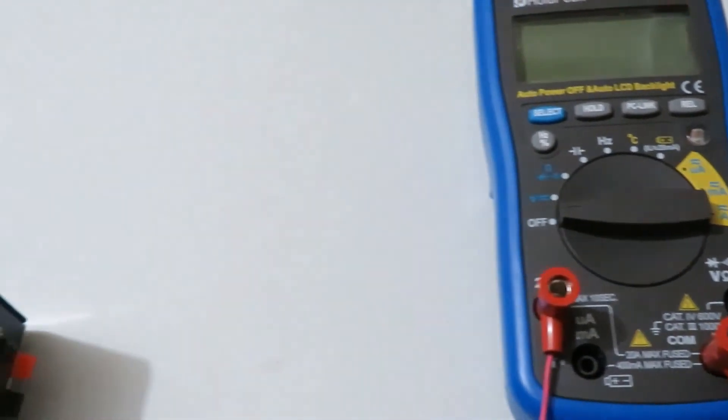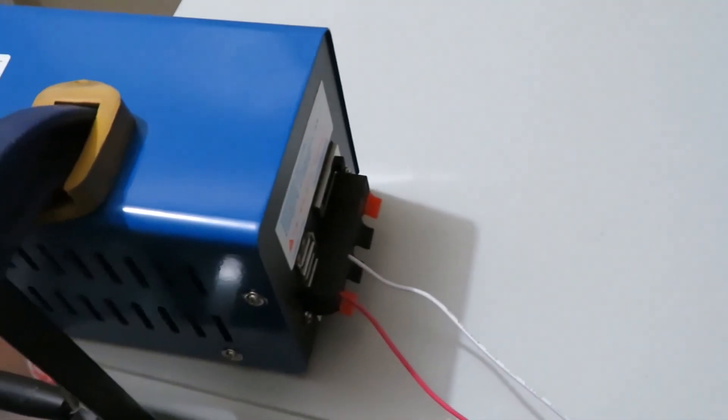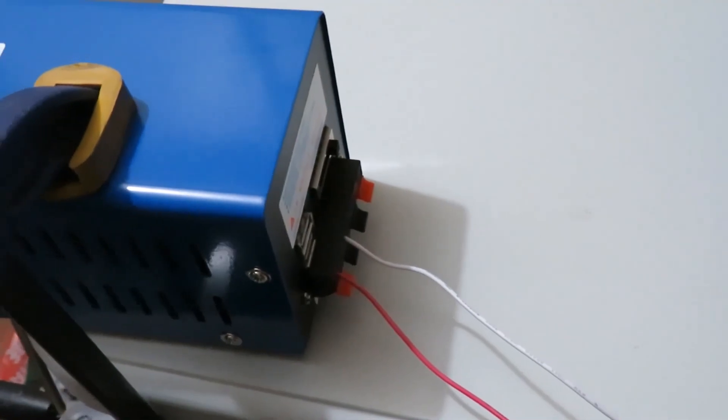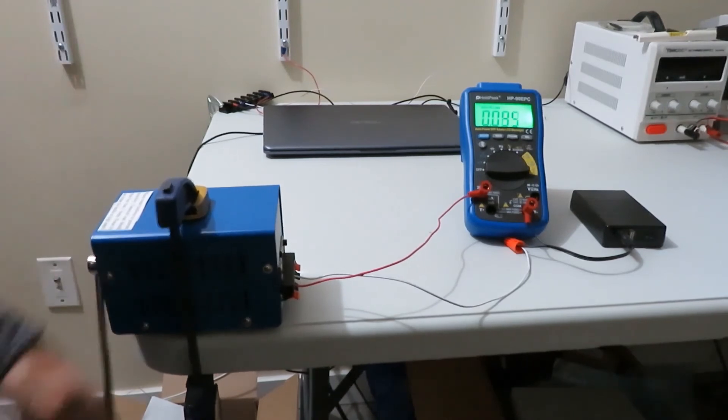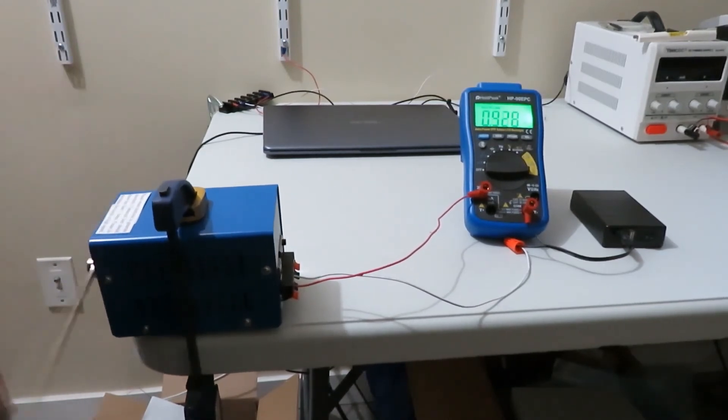A multimeter is connected in series to measure the current and the sliding switch is set at 12 volts. I am now cranking the generator. You can see the maximum charging current I was able to achieve is 1 amp. The average charging current is around 800 milliamps.